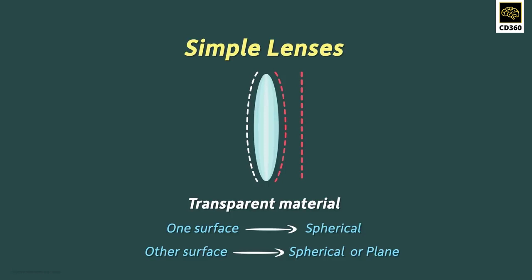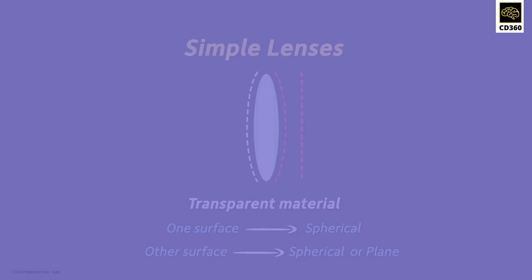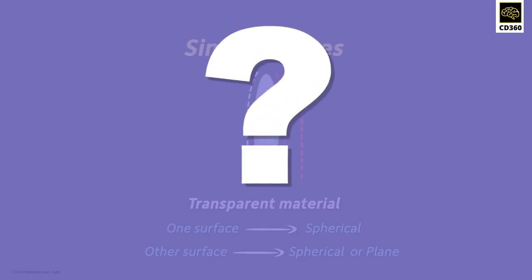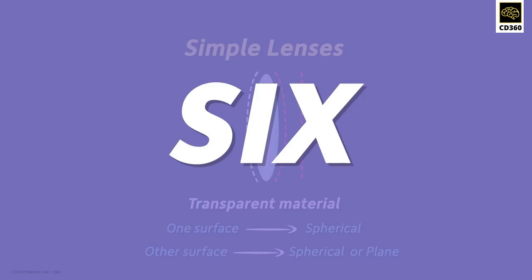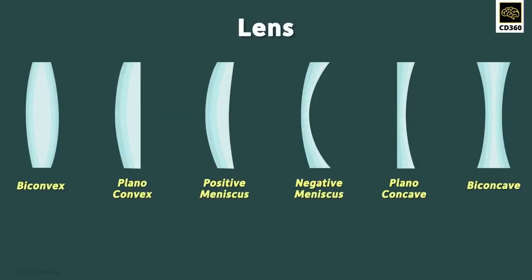Let me ask you an interesting question. With this knowledge, how many types of lenses do you think exist? There are six types of simple lenses — yes, six! And this is what they look like.